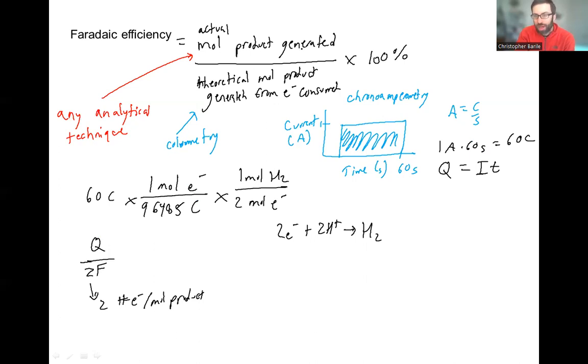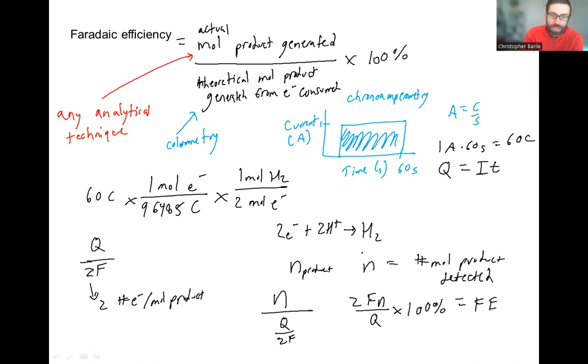And so putting this all together, now you have actual moles products generated. We could call that n, n product, and define that as a number of moles product detected by your analytical technique. And so now we have n divided by q divided by zF, so you get zFn over q times 100%. And that equals your Faraday efficiency. So sometimes people write it like this. I don't see really a value of going through this. I just figure out the number of moles generated. And then I convert the number of charge to the number of products that would be generated theoretically.